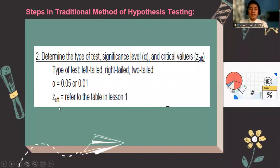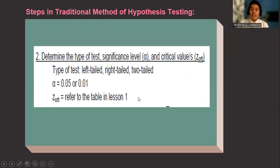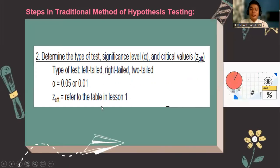For the critical values of z, it's very easy to get it because we have the listed already on the table, the critical values. But for the critical values of the t-test, you always refer to the t-table using the degrees of freedom.